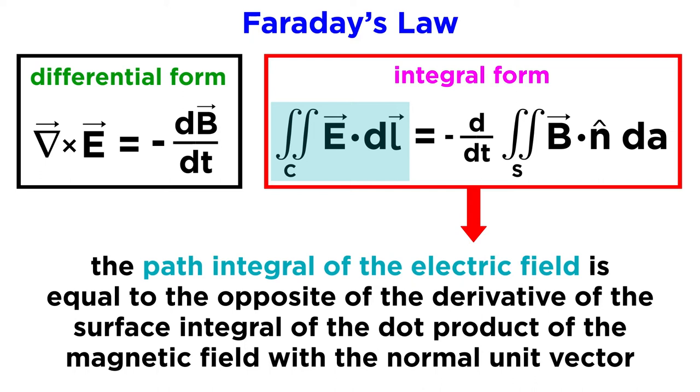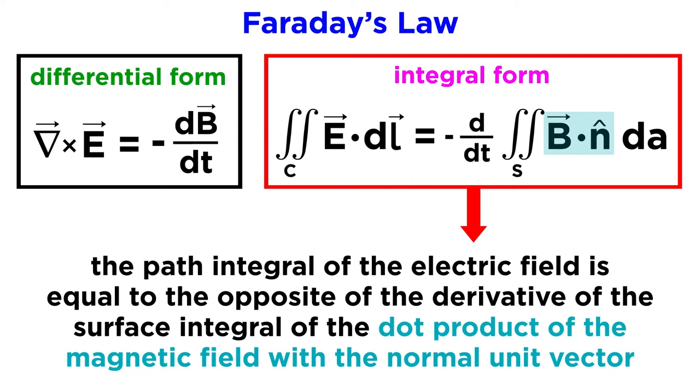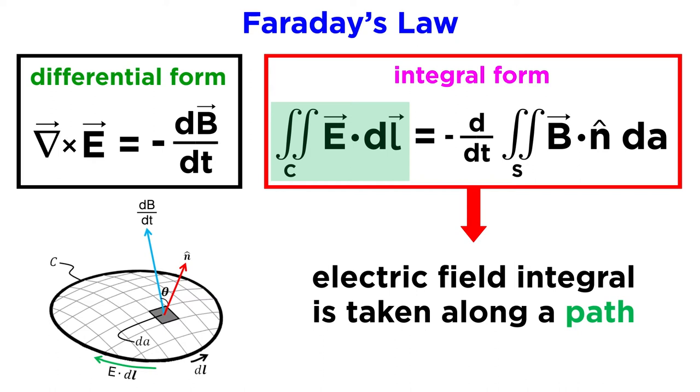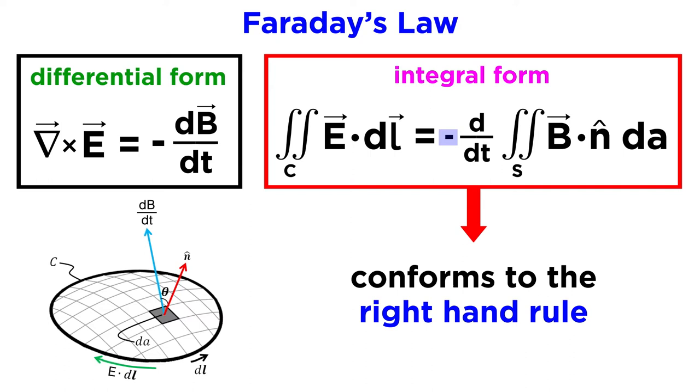The integral form of Faraday's law looks like this. We have the path integral of the electric field being equal to the opposite of the derivative of the surface integral of the dot product of the magnetic field with the normal unit vector. So what we mean by that is that on the left side we have the electric field integral taken along a path. This is meaningless without the context provided by the right side. The result is a scalar electromotive force.